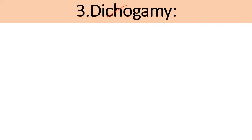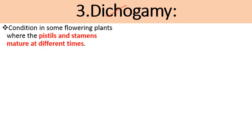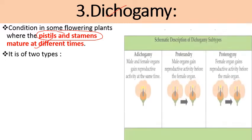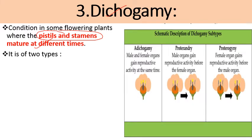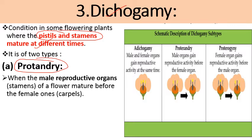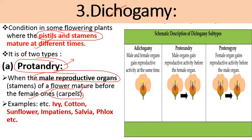The next adaptation is dichogamy. In this condition the male and female reproductive structures mature at different times — either the male reproductive structure matures first or the female one matures first. It is a condition in some flowering plants where pistil and stamens mature at different times, ensuring cross pollination. The first type is protandry, where the male part matures first. In protandrous flowers the stamens of the flower mature before the female carpels. Examples include ivy, cotton, sunflower, Impatiens, Salvia, and Phlox.